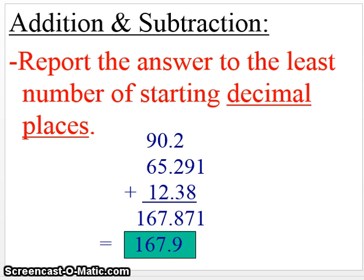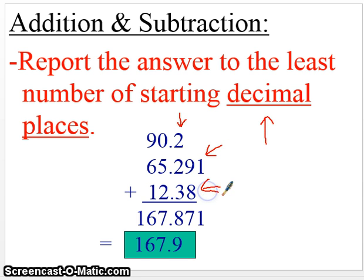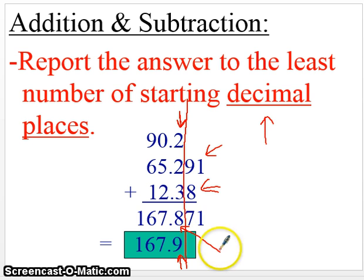When you're adding or subtracting, there's a similar rule: report the answer to the least number of starting decimal places. When adding and subtracting, you look at the decimal places. The first number has one decimal place, the second number has three decimal places, and the third number has two. When you combine all these, you can only report to the least — in this case, just the first decimal place. That's why we put .9 here. Notice how this eight got rounded up to a nine because of that seven behind it.